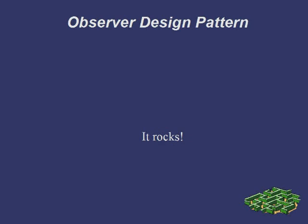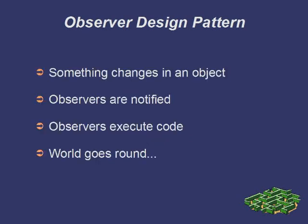The observer pattern arises in programming when we want to respond to the changing state of an object. When an object changes, it will notify its observers — other objects who have told the object that they want to be notified of updates — so that they can execute some other code on their side. In this way, we dynamically respond to new events that occur within an object.